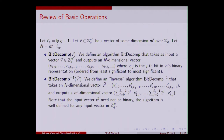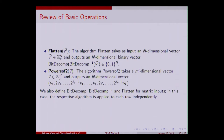One operation is bit decomposition: it takes in a vector and outputs a larger vector consisting of its binary representation, from least significant to most significant bit. There is an inverse algorithm that does the opposite and is also defined for any binary input. Flatten is similar to BitDecomp, except it applies the inverse algorithm first and then converts to bits. PowersOfTwo takes a vector and outputs a vector multiplied by all powers of two, providing an easy way to do multiplication.